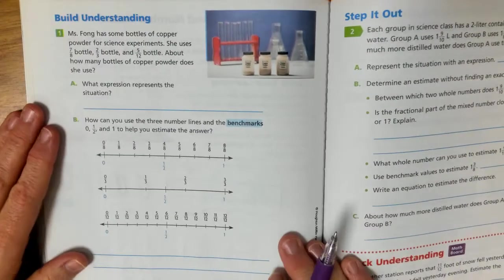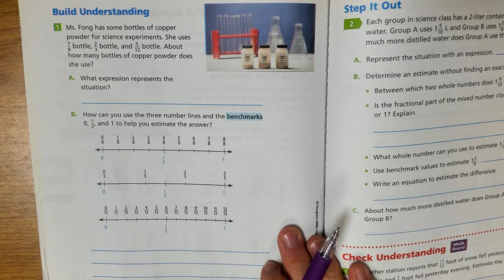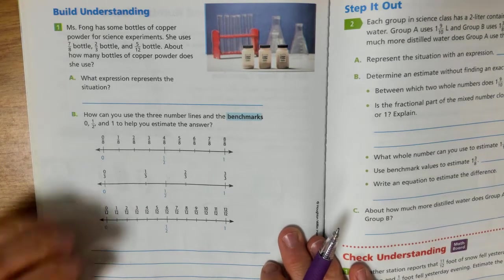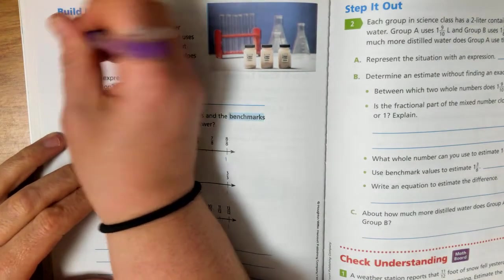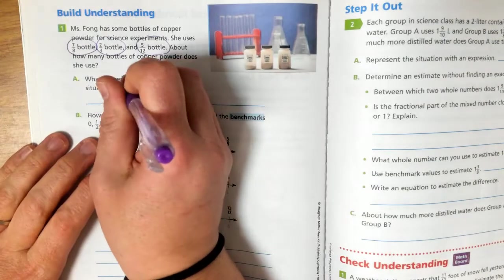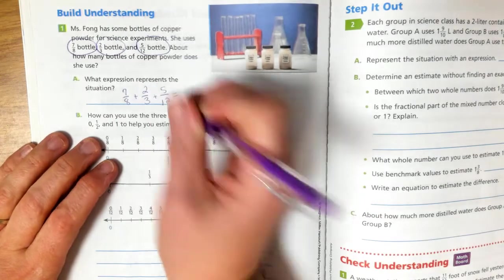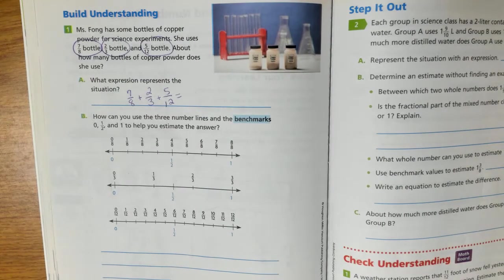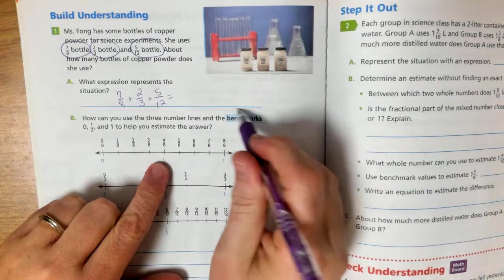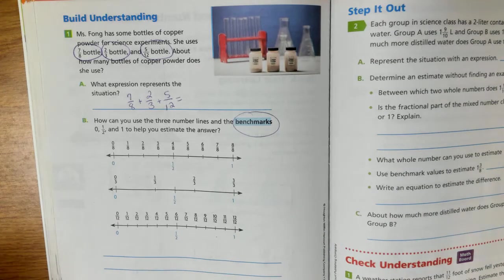So Ms. Fong has some bottles of copper powder for science experiments. She uses 7 eighths of bottle, 2 thirds bottle, and 5 twelfths bottle. About how many bottles of copper powder does she use? What expression represents the situation? Well, we know that she has this much of copper powder, right? So she has 7 eighths plus 2 thirds plus 5 twelfths, right? That would be our addition problem. But we can't add denominators that are different. So let's see if we could use the three number lines and benchmarks. Benchmarks are the numbers 0, half, and whole. What are they closest to?